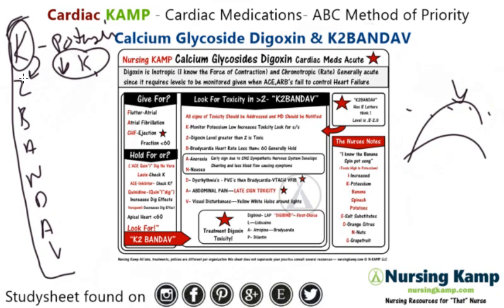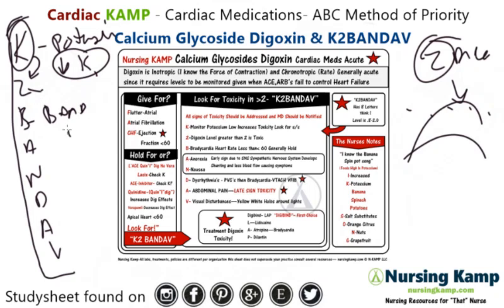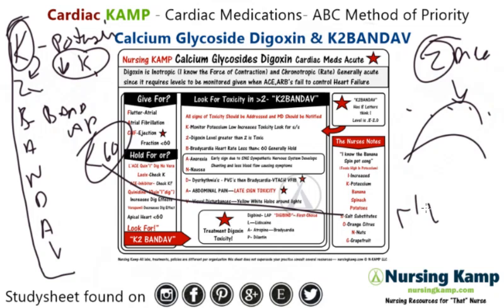2 is the max level for digoxin. B is bradycardia — we monitor for bradycardia, so we'll do the apical pulse. If that's less than 60, we hold that medication generally. It's also a chronotropic, which means it slows the heart rate down.